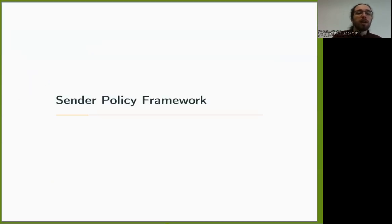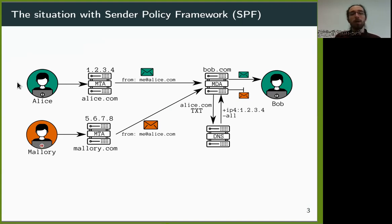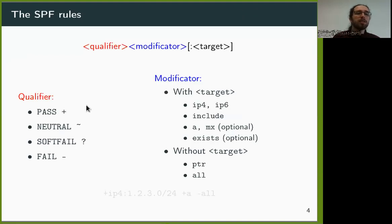In order to increase their reputation and look legitimate, spam domains tend to configure some anti-spoofing protocols. The Sender Policy Framework, SPF, is one of the most deployed mail security protocols. When sending a mail, nothing prevents the sender from forging the from field of the mail, so a malicious user could impersonate someone else. The SPF was built to prevent such trivial impersonation by adding a verification step at the receiver's mail server. When receiving a mail from Alice.com, Bob's server will query the DNS for the TXT entry of Alice.com. This record will contain a set of rules that will tell Bob's server which IPs are allowed to send mails on behalf of Alice.com, allowing Bob's server to trust Alice's mail and drop Mallory's mail from an unauthorized IP. The SPF rule set is stored in the TXT record of a domain.